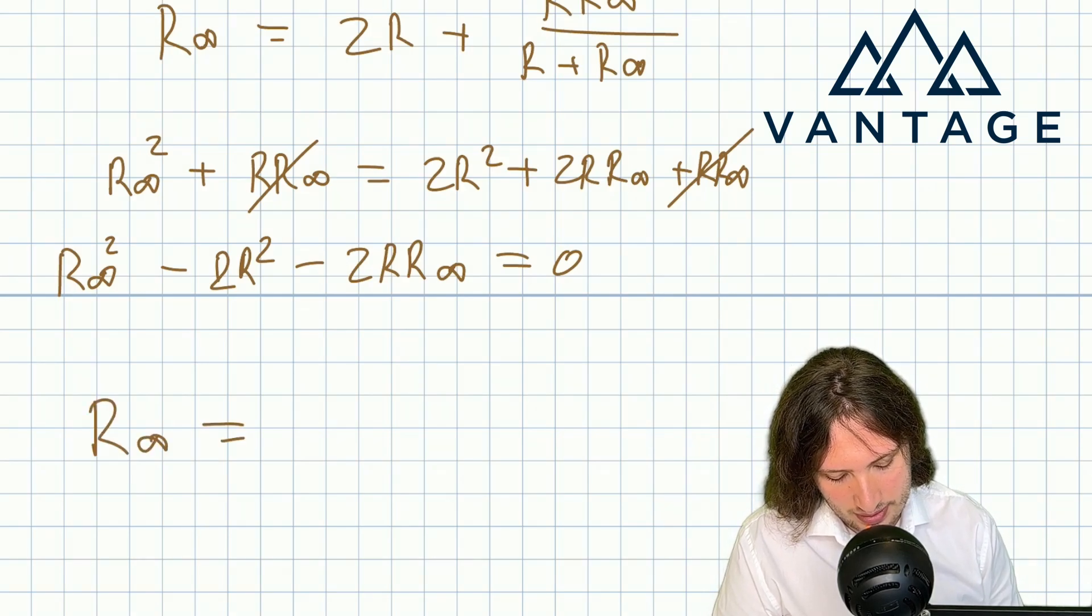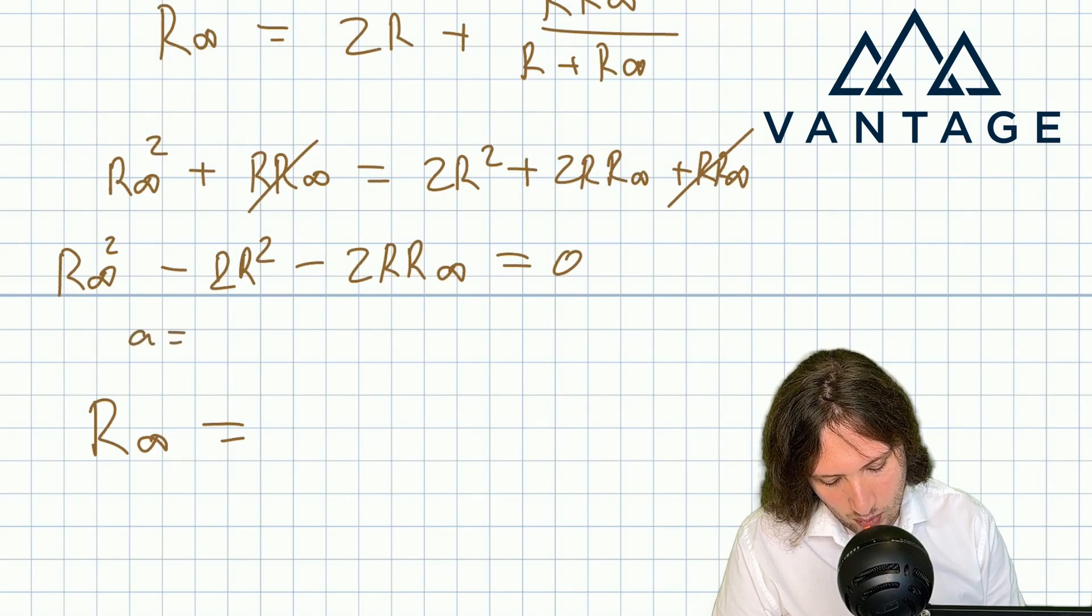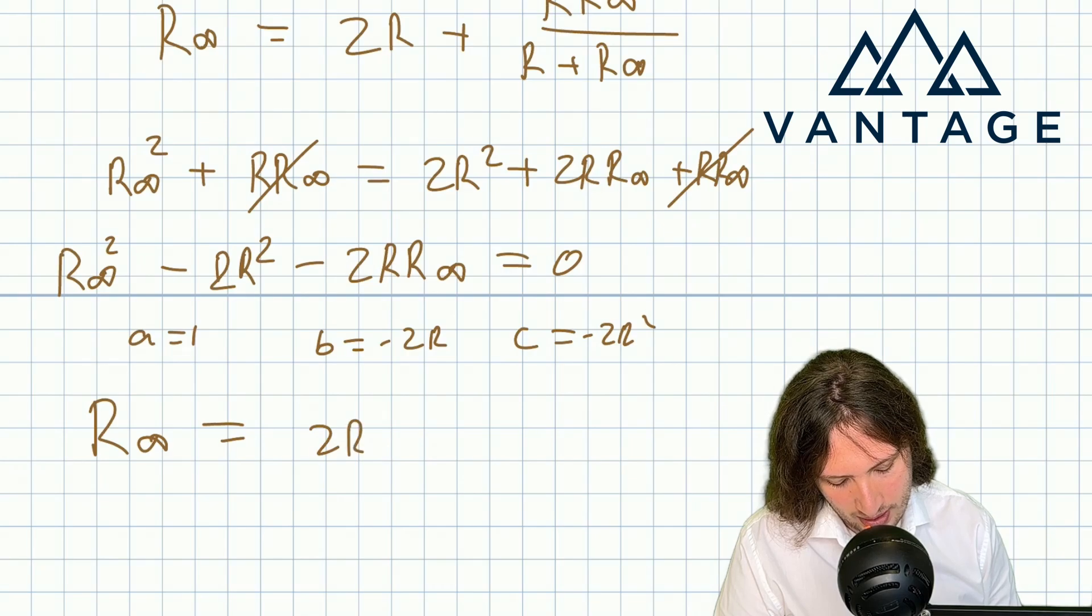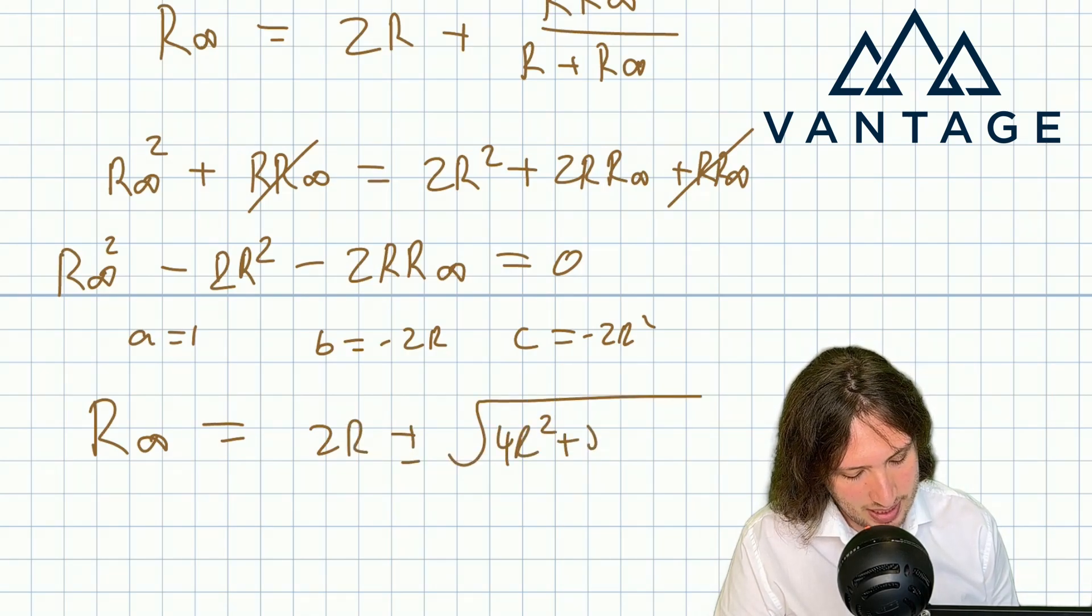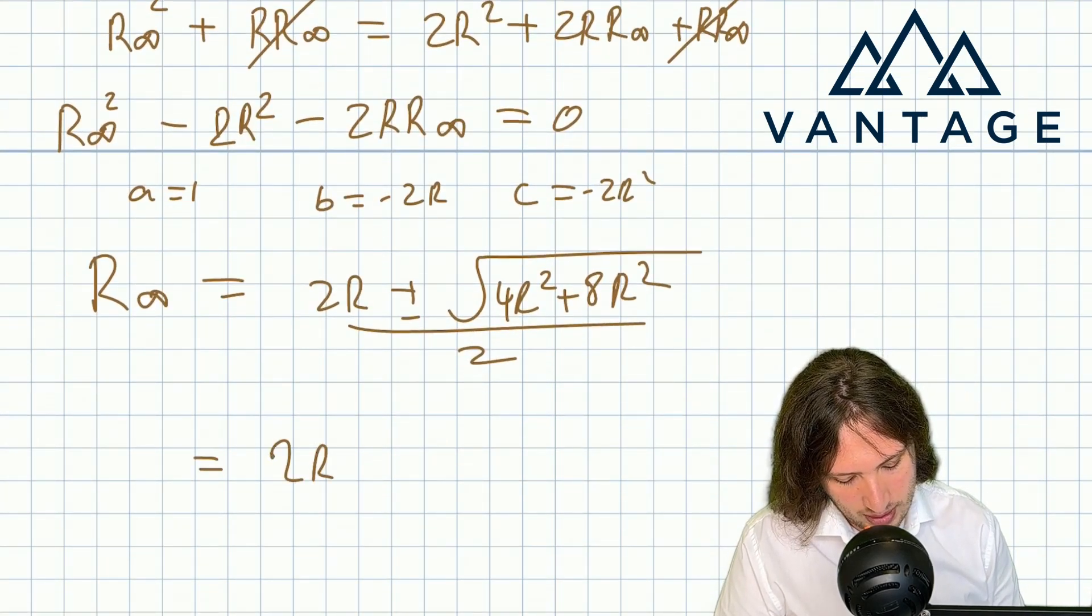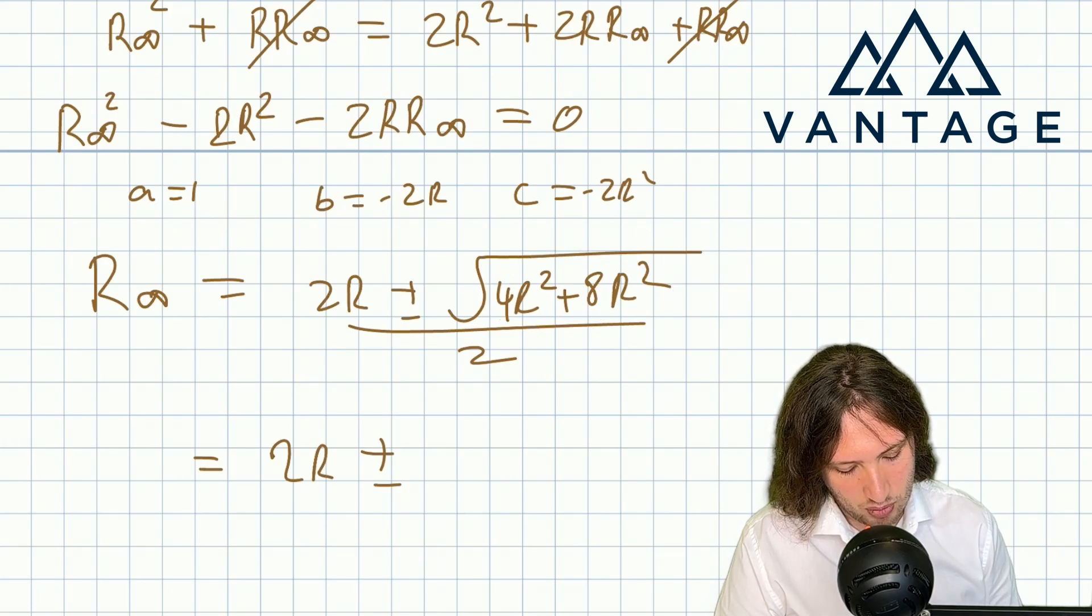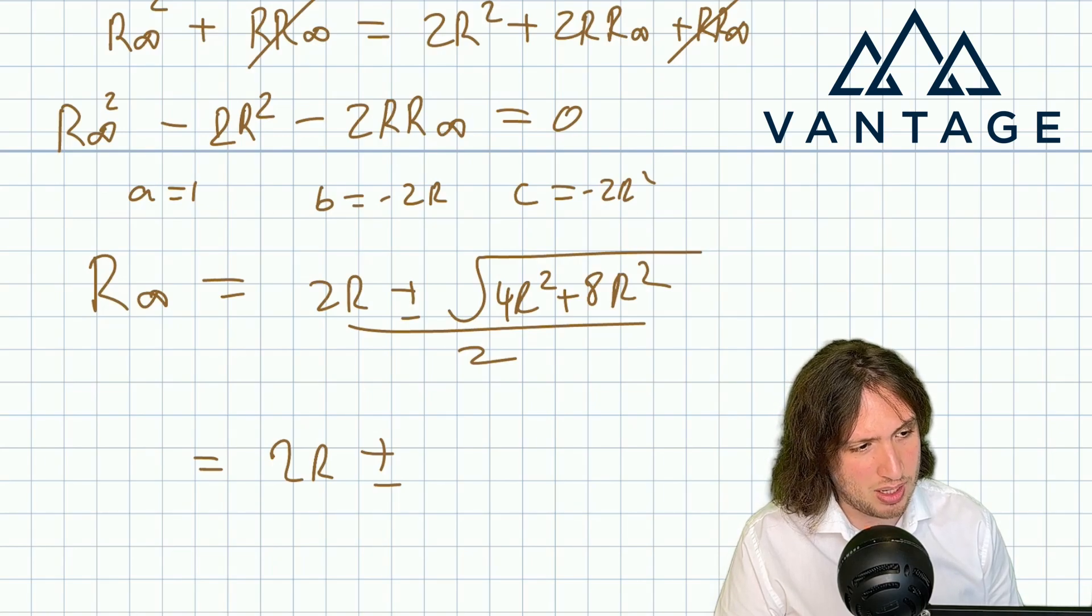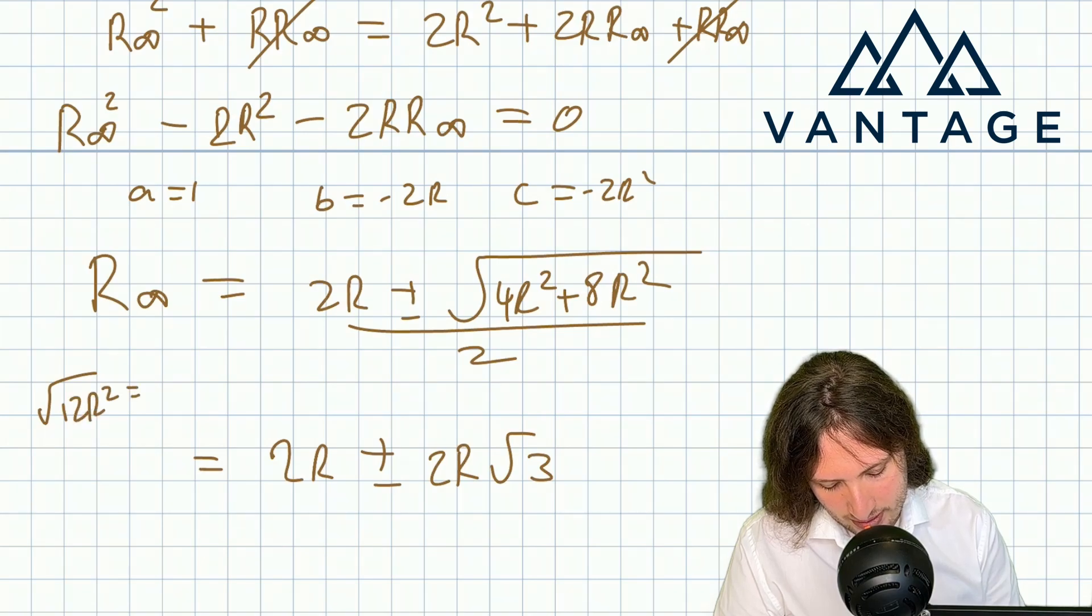By the quadratic formula, R infinity is going to be, so this is the constant, this is like a is 1, b is minus 2R, c is minus 2R squared. So I get 2R plus or minus square root 4R squared minus, minus makes plus 8R squared, all over 2. Which is 2R plus or minus, and that's 12R squared. So I can pull out an R and also a 4. Well I can pull out an R squared and a 4, which becomes a 2R, and then I'm left with a root 3.